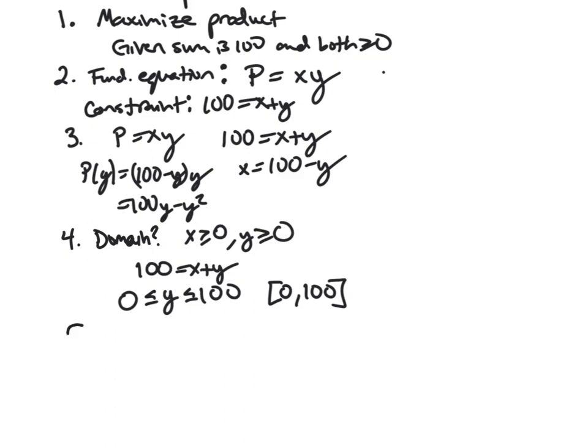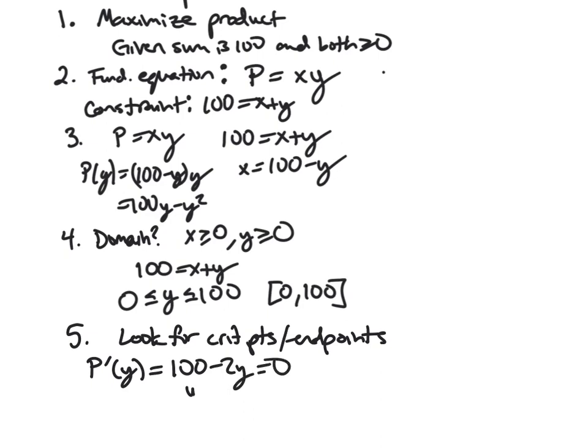And so that tells us how to actually find our extrema. So since we're continuous on a closed interval, we want to look for the critical points and the endpoints, and check those back in our original P of y. So the first thing we should do is look for our critical point. So we look at P prime. That's 100 minus 2y. Set it equal to zero. And so y equals 50 is our critical point, our only one.